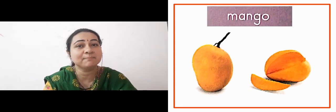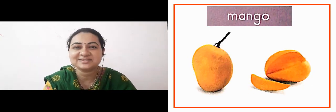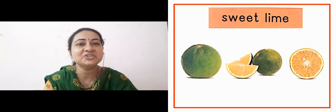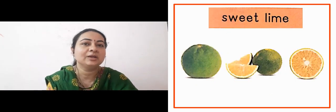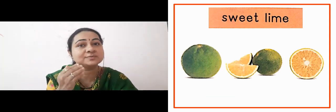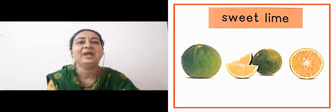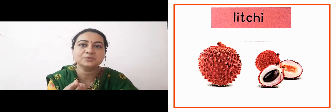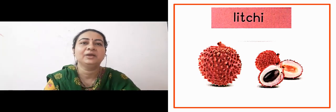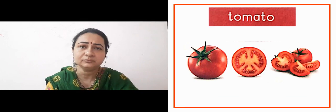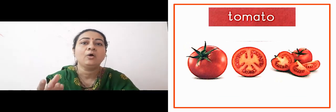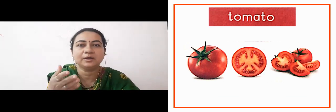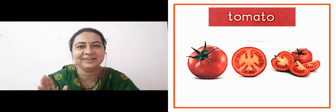The next slide is showing us mango. It is available in summers and dear children, don't forget that mango is our national fruit. The next slide is showing us sweet lime — we generally drink its juice. The next slide is showing us lychee — its skin has to be peeled and then we eat the fruit. The next slide is showing us tomato — we use it in vegetables and also eat it as is, or make a warm tomato soup, which is very healthy.